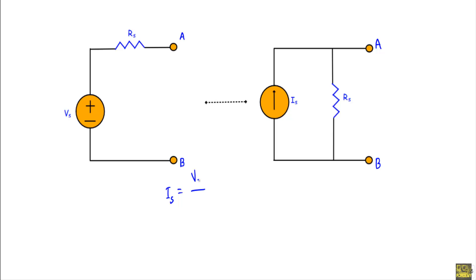If I want to convert a current source to a voltage source, the value of voltage source Vs will be equal to Is multiplied by Rs. If I convert a current source to a voltage source, I will place Rs in series with Vs. If I convert a voltage source to a current source, I will place Rs in parallel with the current source Is. This is what source transformation theorem states.